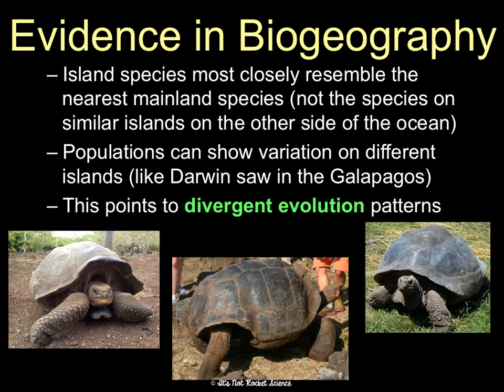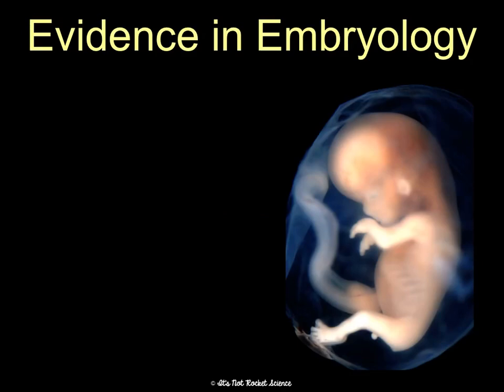A lot of this points to divergent evolution patterns. Scientists use biogeography a lot to show divergent evolution and sometimes even speciation.